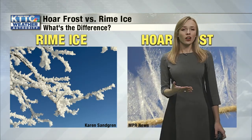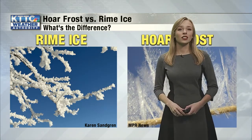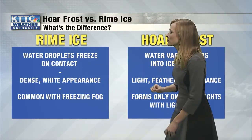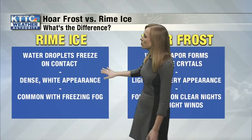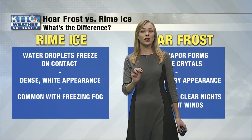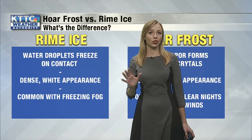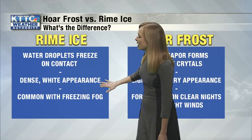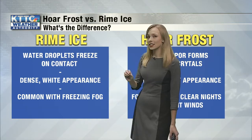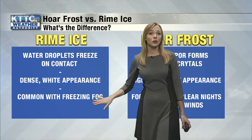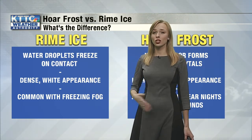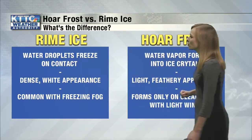Sometimes it can be hard to tell the difference because the main difference is really how they're formed. Rime ice forms when water droplets freeze on contact with trees, grass, your car, or really anything. They appear more white and dense, more compact — and that's really common with freezing fog. So rime ice is actually the more common of the two.